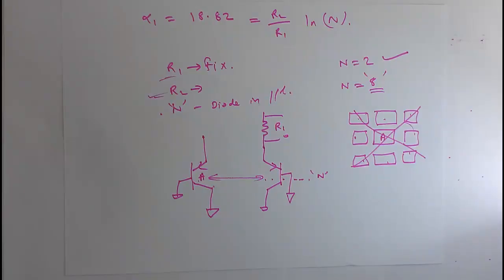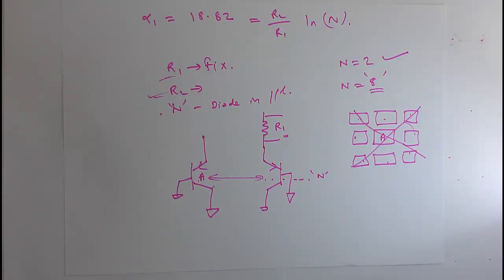With this, the discussion of BGR is over. We can now go to Cadence simulator and see how we tune R1, R2, and N to completely cancel the CTAT and PTAT and obtain the reference voltage.